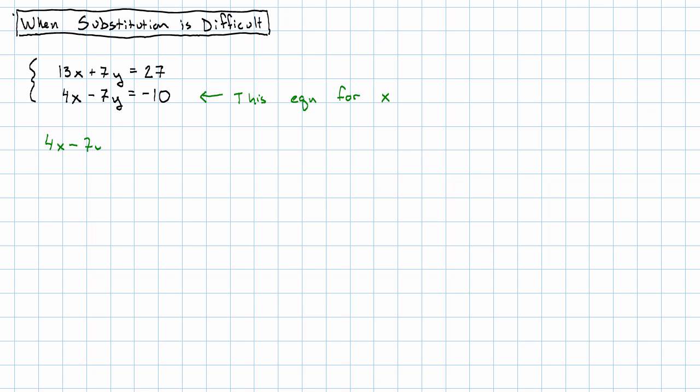4x minus 7y is negative 10. Add 7y to both sides, and divide both sides by 4. We'll get x is 7 divided by 4 is 7 fourths, 10 divided by 4 is 10 fourths. We could simplify that fraction, but don't worry about it.